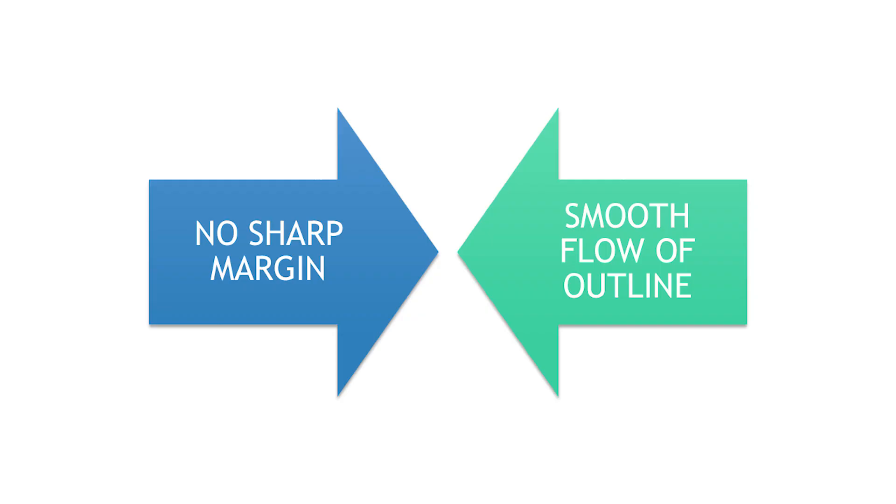This tells you three important points. One is you should have a smooth flow of the outline. You don't want a sudden acute angle because that will increase the chance of force over the restoration and tooth.